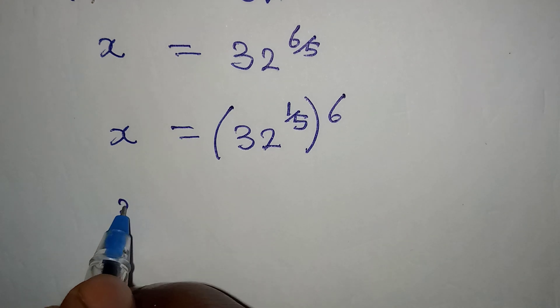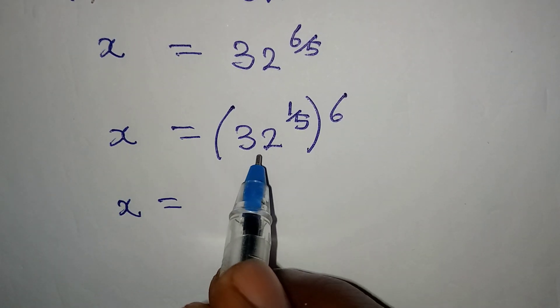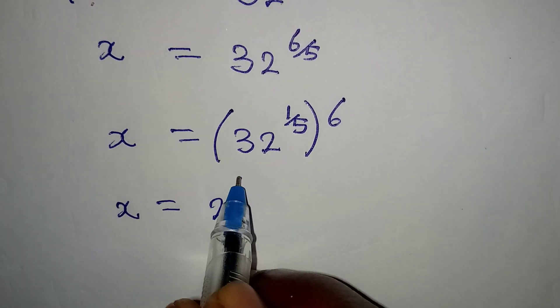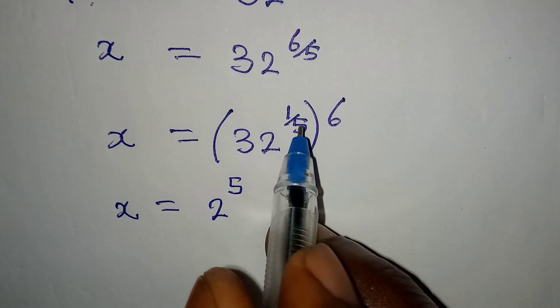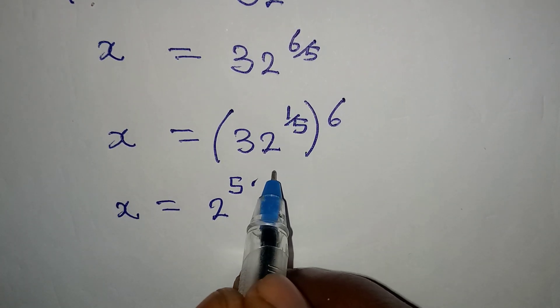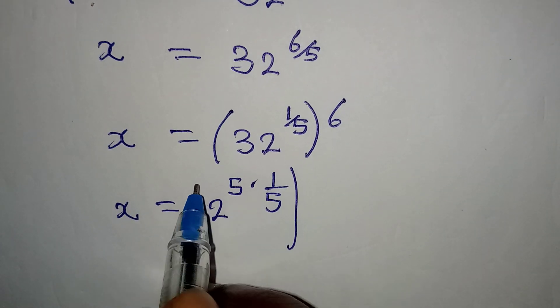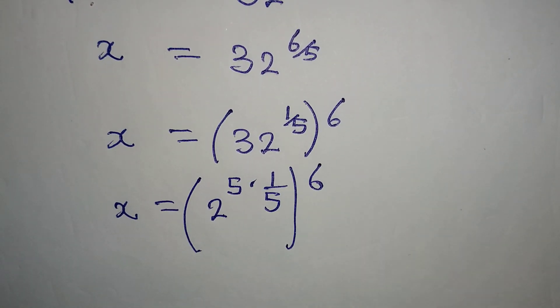Or by the way, let's do it this way. x will be equal to, 32 is 2 to the power of 5, then multiply by 1 over 5 here. But then the power of 6 outside is still there.